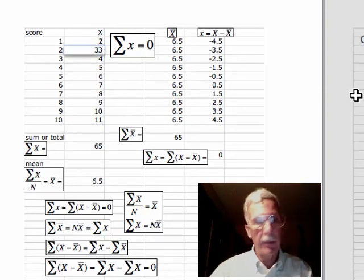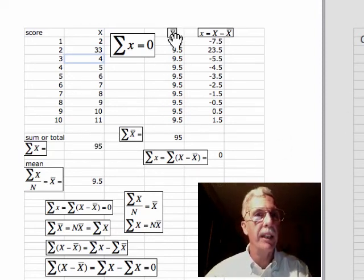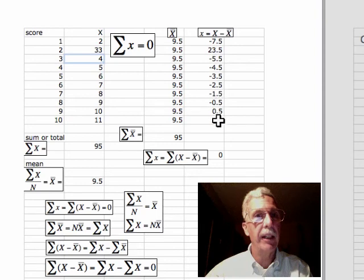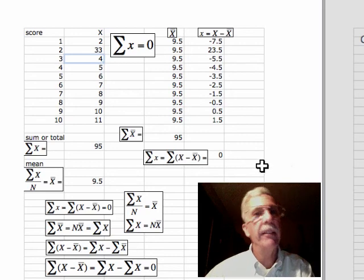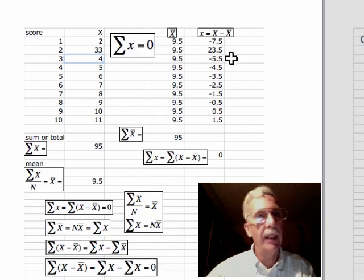So let's turn this one to 33 and see what happens. Then our sum comes up to 95, our mean is 9.5, and we have a big deviation here, and everybody else is just about as negative to balance out, and we get a sum of deviations of 0. And that's why the sum of deviations from the mean is always 0.